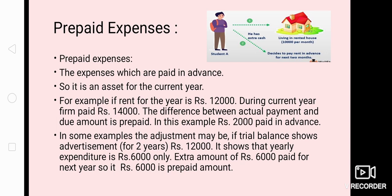Now see this example: rent for the year is rupees 12,000. That is the rent supposed to be paid by the firm. During the current year, the firm paid rupees 14,000. So 12,000 is the actual rent due for that office, but we paid 14,000. The difference between the actual payment and the due payment — that is 2,000 — is prepaid. It was paid in advance for the next year. Per month the rent is 1,000, so for 12 months it is 12,000, and the 2,000 extra is prepaid.